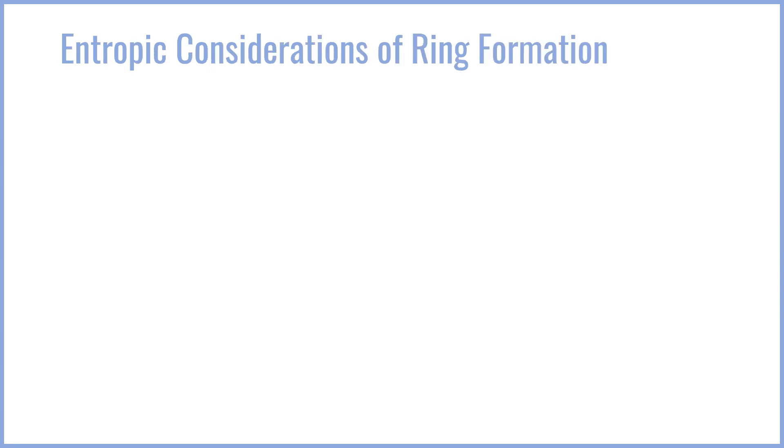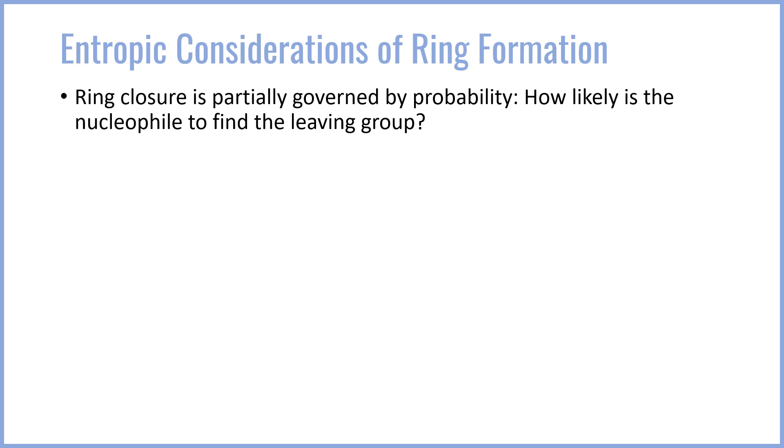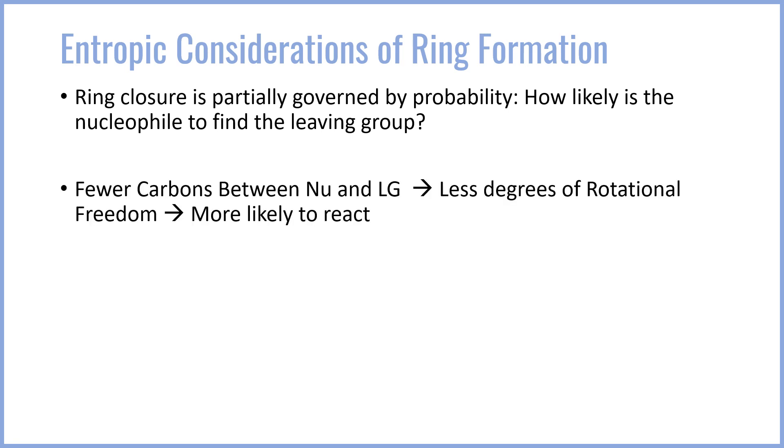Now there are two major considerations for the formation of a ring. One is entropic and the other is enthalpic. Entropic considerations have to do with probability. That is to say ring closure is partially governed by how likely the ring is or rather how likely the nucleophile is to actually find that leaving group. If the chain is very long and the nucleophile is very far away, it's unlikely that the nucleophile is able to find the leaving group with any sort of frequency. As a result, fewer carbons between the nucleophile and the leaving group means there's less degrees of rotational freedom. Single bonds rotate and so for every single bond between the two that is present, there's a degree of rotational freedom which means that the nucleophile and the leaving group might be rotated to be far apart from one another. So the fewer carbons there are in the chain between the nucleophile and leaving group, the more likely the species are to react.